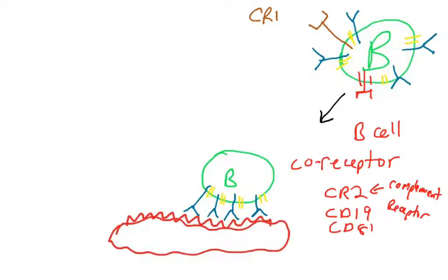So, this B-cell has approached the pathogen. Its antigen-binding sites just happen to have a shape to bind some molecule on the surface of the pathogen. So, we have B-cell receptor cross-link. That's great. But we need more. So, this pathogen, hopefully, is also covered in complement, right?